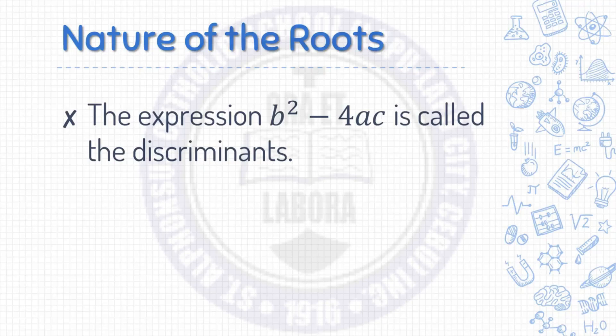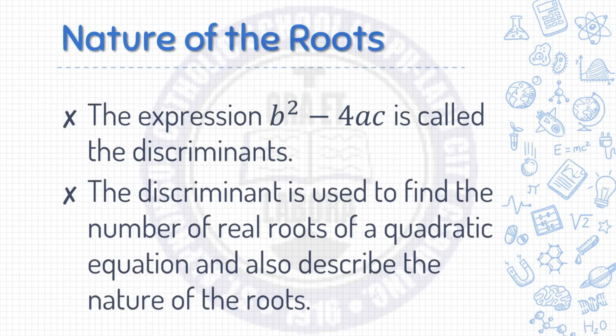The expression b squared minus 4ac is called the discriminant. The discriminant is used to find the number of real roots of a quadratic equation, and also it describes the nature of the roots.